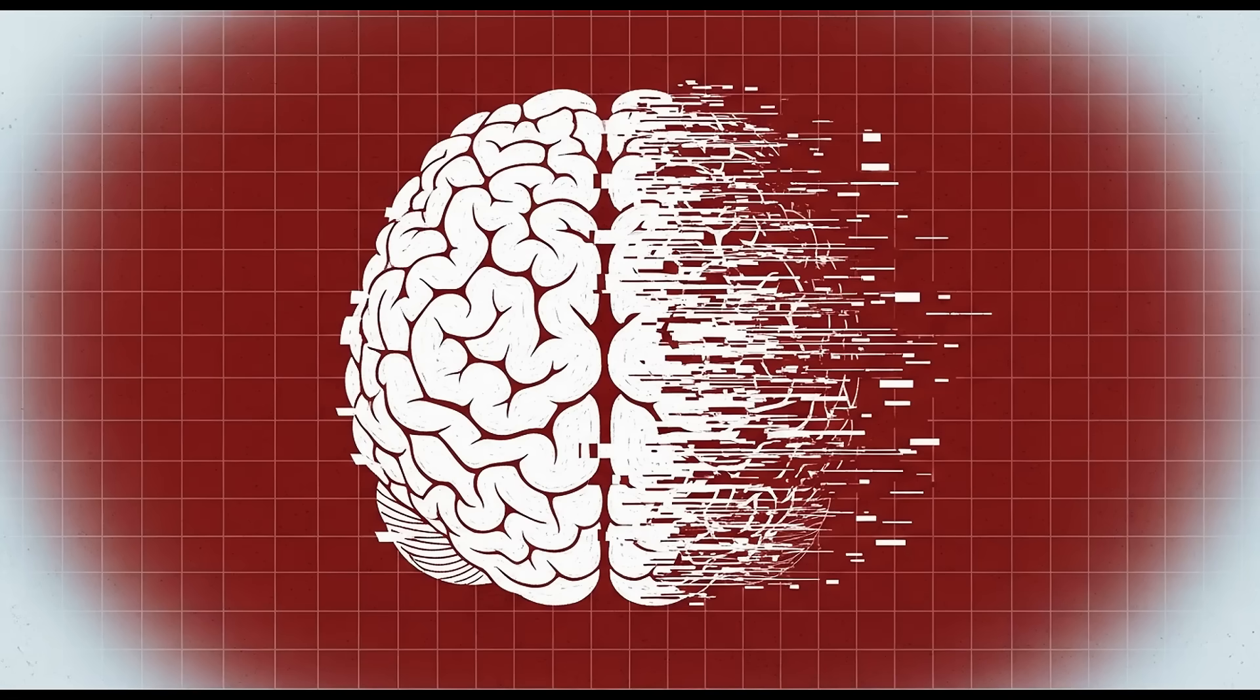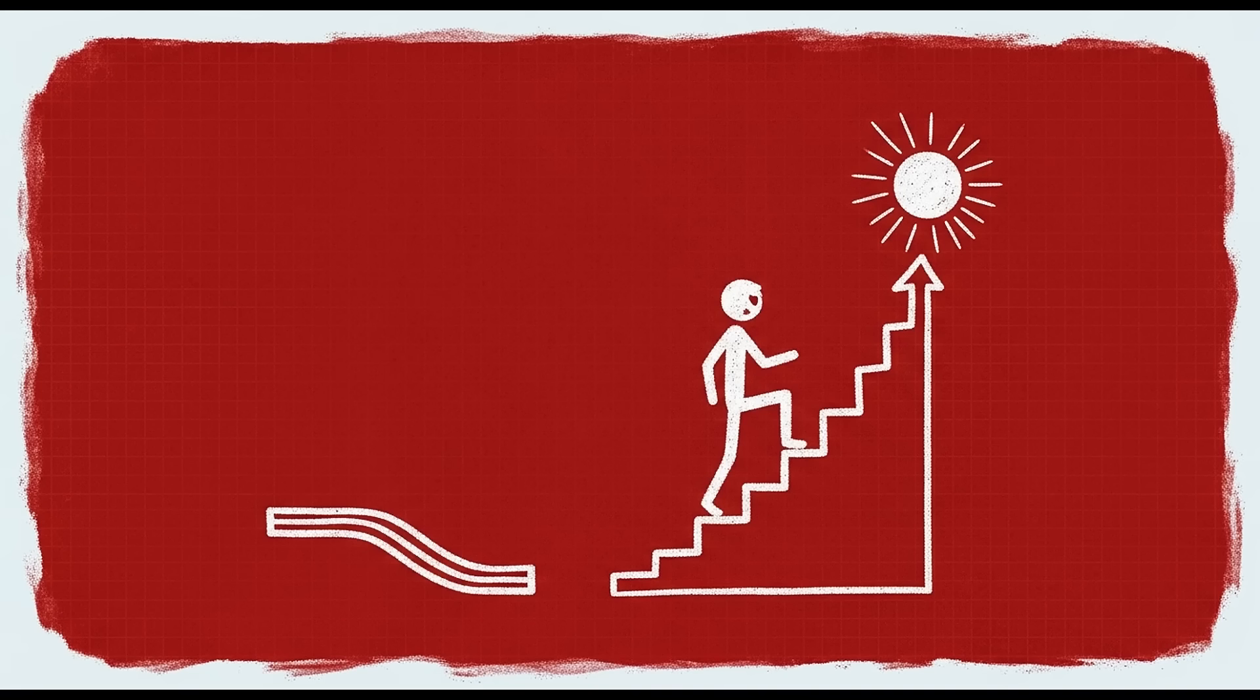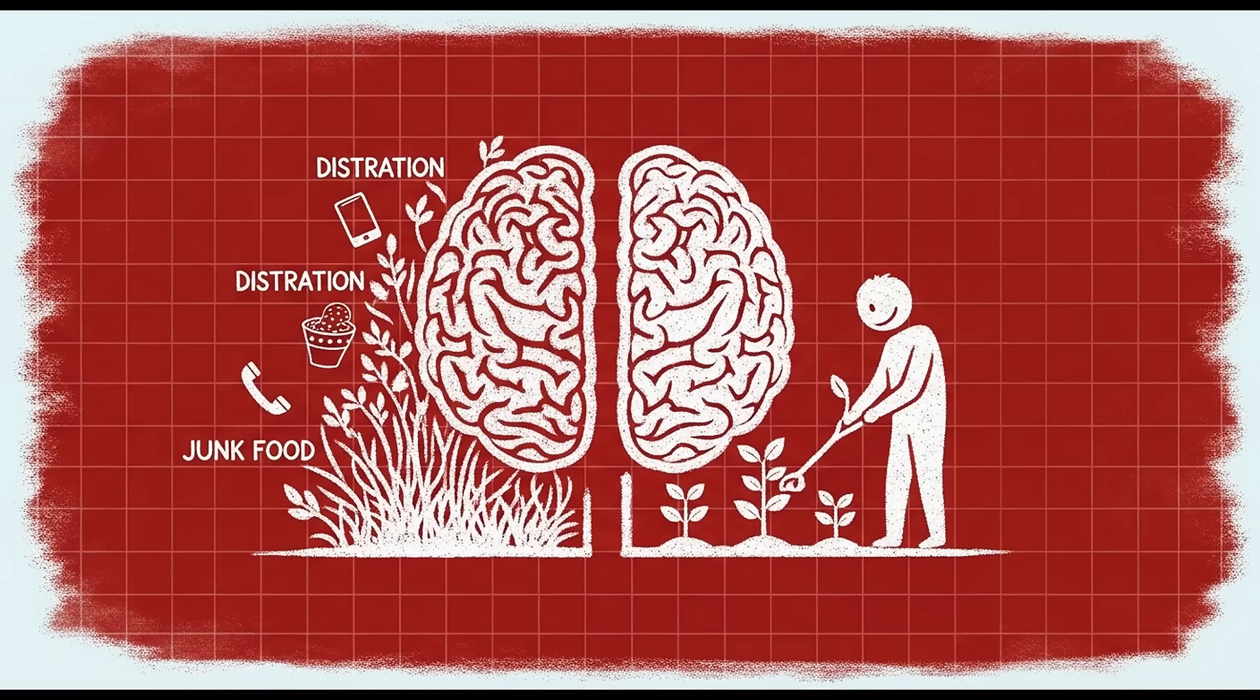But here's the thing that people don't want to hear. This isn't a one-time fix. Your brain will always try to drift back toward easy rewards. That's not a bug. That's a feature. The key is building systems that make discipline the path of least resistance.